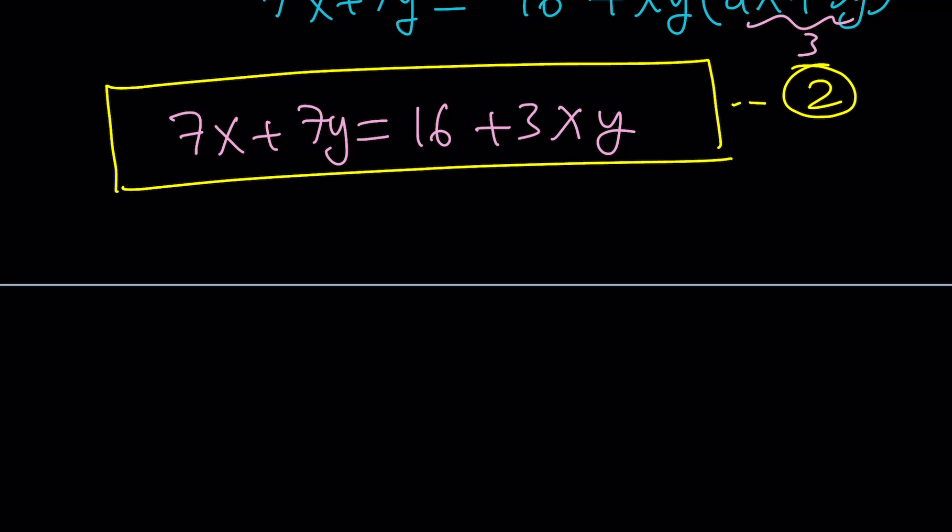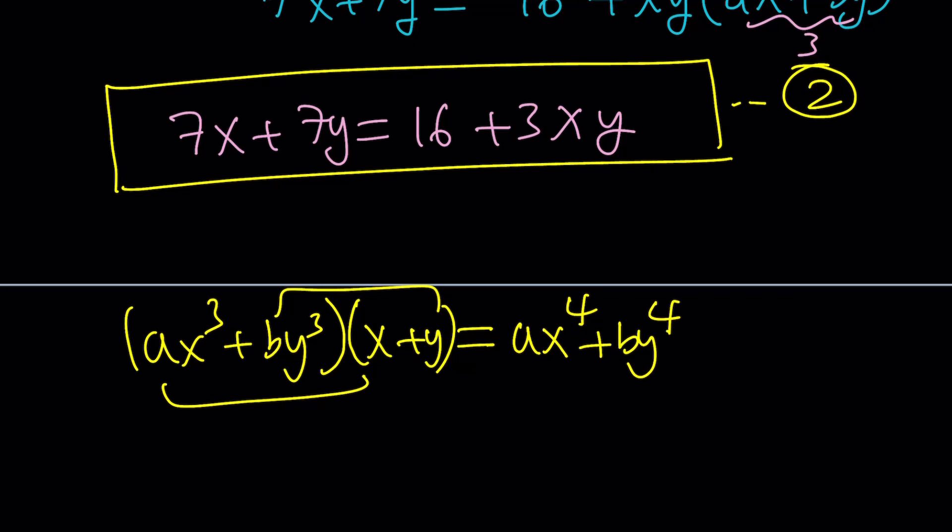Okay. To come up with a third equation, I'll take the third equation and multiply by x plus y again. You get the pattern? Now, if I distribute, I get ax to the 4th. Again, multiplying these first. Plus by to the 4th. And then ax cubed y plus bxy cubed.